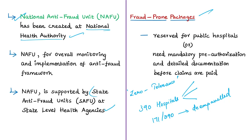As per the guidelines, all packages prone to fraud and abuse are reserved for public hospitals, or require mandatory pre-authorization and detailed documentation before claims are paid. However, private hospitals were found performing these government-reserved procedures and submitting them under different package names or as unspecified packages. Strong actions are expected to be taken on these private hospitals for better implementation of PMJAY. The National Anti-Fraud Unit conducts regular medical audits to check for violations under this scheme.